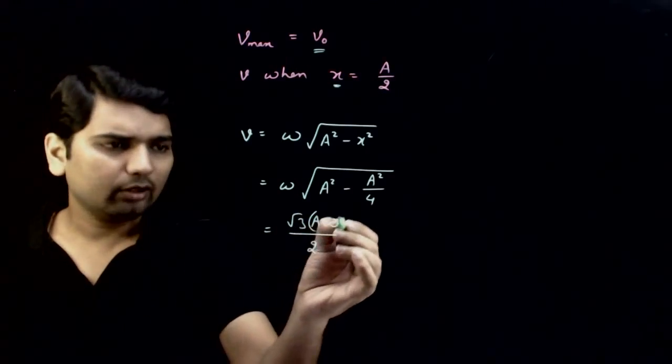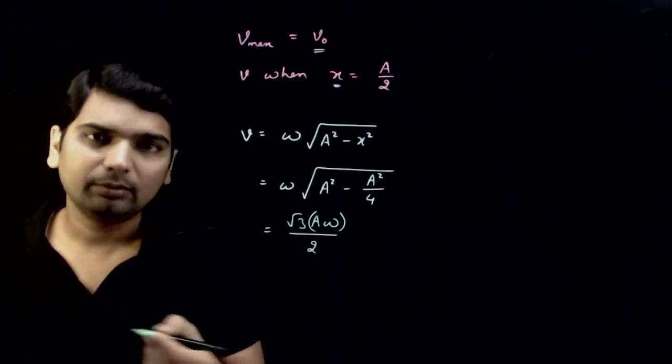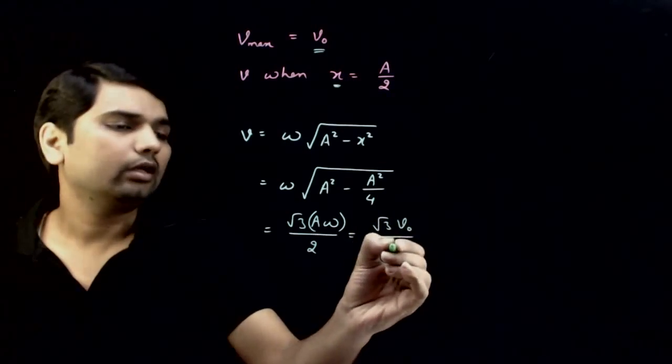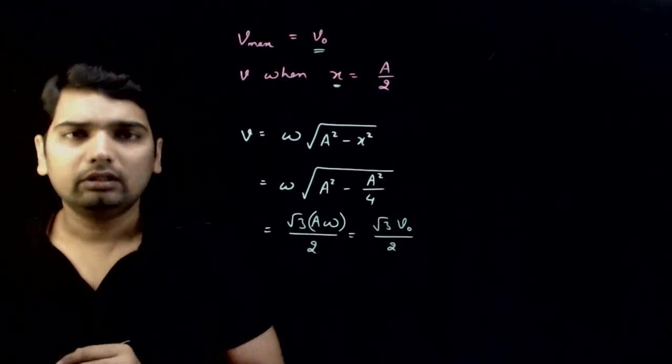And a omega is equal to maximum speed, so this is root 3 V0 by 2. This is your answer.